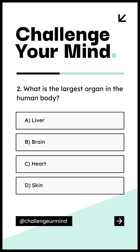Number 2. What is the largest organ in the human body? Letter A: Liver. Letter B: Brain. Letter C: Heart. Letter D: Skin.